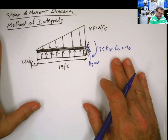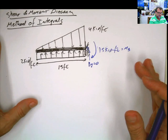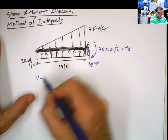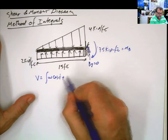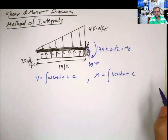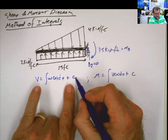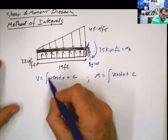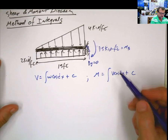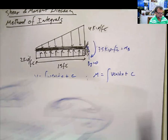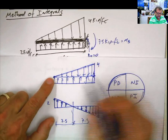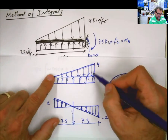Now, if we're going to use the method of integrals for this problem, it's easy. The only thing we have to do is combine the equations from the top and the bottom loads. Remember the basic definition: shear is the integral of the load plus the boundary condition, and moment is the integral of the shear plus another boundary condition. If this is the top load and this is the bottom load, I can get the equation of each and combine them.